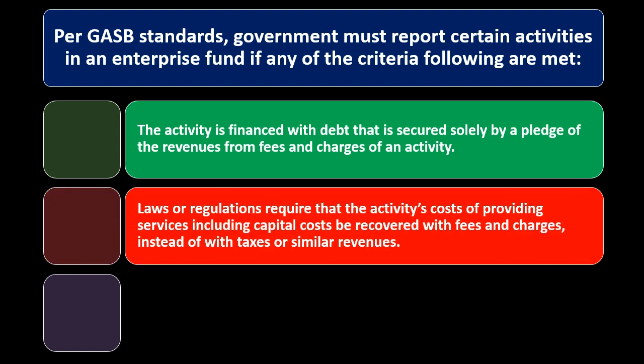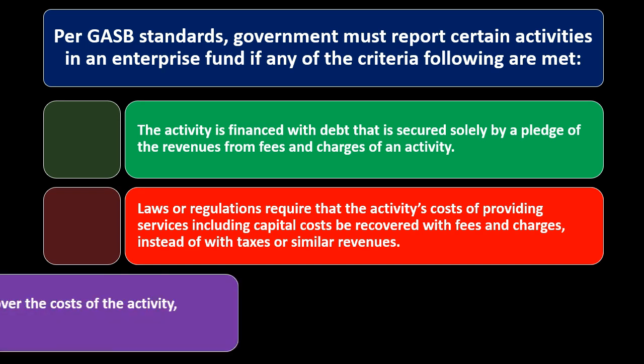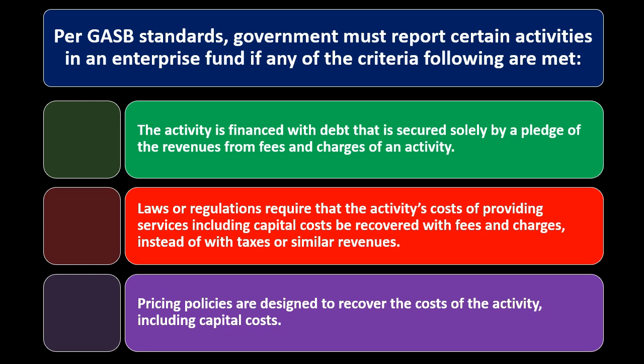The second criteria: laws or regulations require that the activity's costs of providing services, including capital costs, be recovered with fees and charges instead of with taxes or similar revenues. In a proprietary fund, costs are covered with fees and charges, acting more like a for-profit organization, as opposed to taxes or revenues not directly related to the services provided. The third criteria: pricing policies are designed to recover the costs of the activity including capital costs.